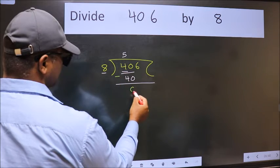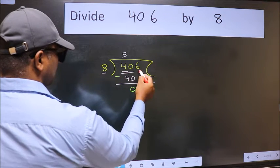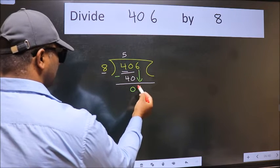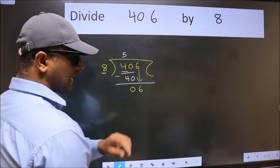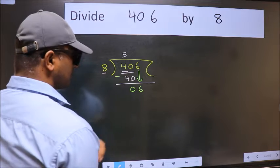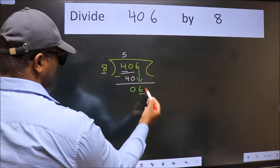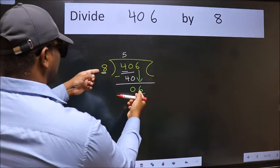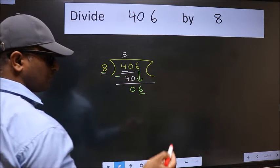After this, bring down the beside number, so 6 down. After this step, the mistake happens. And the mistake is this: here we have 6 and here 8. 6 is smaller than 8, so what many do...